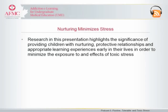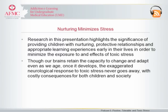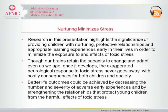Research in this presentation highlights the significance of providing children with nurturing, protective relationships and appropriate learning experiences early in their lives in order to minimize the exposure to and effects of toxic stress. Though our brains retain the capacity to change and adapt even as we age, once it develops, the exaggerated neurological response to toxic stress never goes away, with costly consequences for both children and society. Better life outcomes could be achieved by decreasing the number and severity of adverse early experiences and by strengthening the relationships that protect young children from the harmful effects of toxic stress.